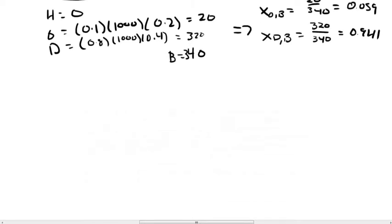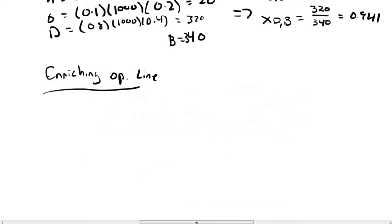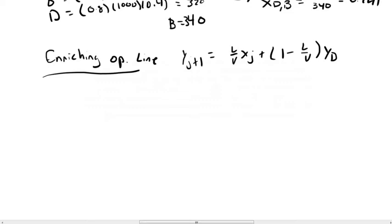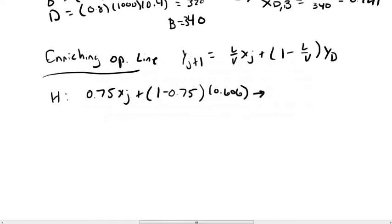We are ready to start building our operating lines. The enriching operating line is given as y_{j+1} = (L/V)·x_j + (1 - L/V)·y_d. For heptane, this will be 0.75·x_j + (1 - 0.75)·0.606, giving the equation y = 0.75·x_j + 0.152. The same is done for octane and decane.